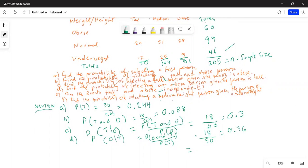This is 18 divided by 50, because 50 are the total of tall column, out of which obese is 18.